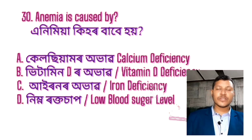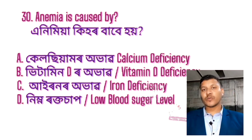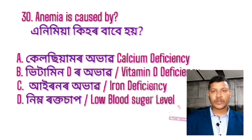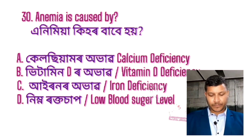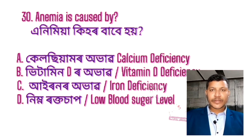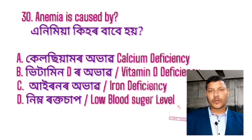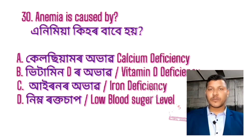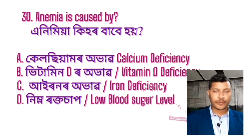Question number 30: Anemia is caused by — options: calcium deficiency, vitamin D deficiency, iron deficiency, or low blood sugar level. The answer is option C — iron deficiency.